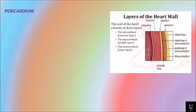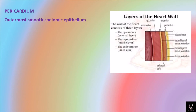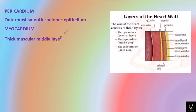The pericardium is the outermost layer and consists of smooth squamous epithelium. The myocardium is the middle layer and is composed of thick cardiac muscle fibers.